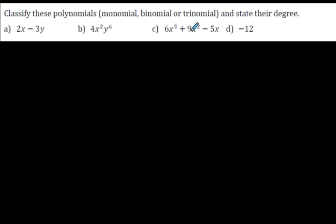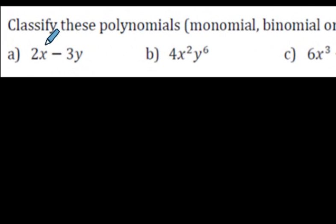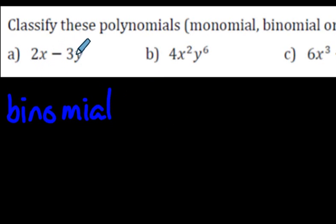Classify these polynomials and state their degree. So a quick recap. If you see two terms, that is called a binomial. Just like a bicycle has two tires. And it's a binomial, and the degree, well, it's 1 there and 1 there. So it's 1 overall. The degree is 1.